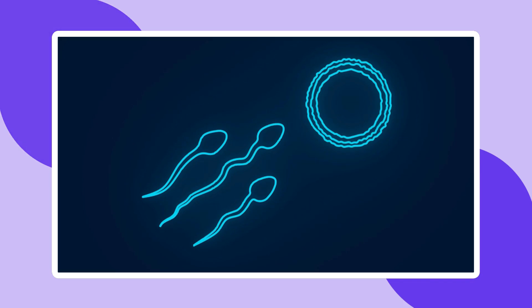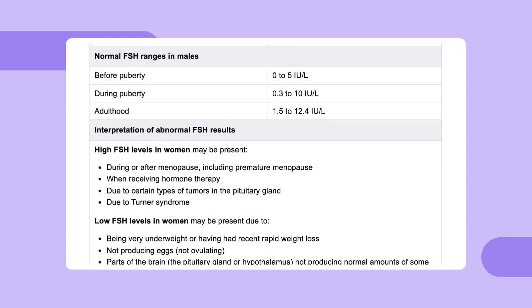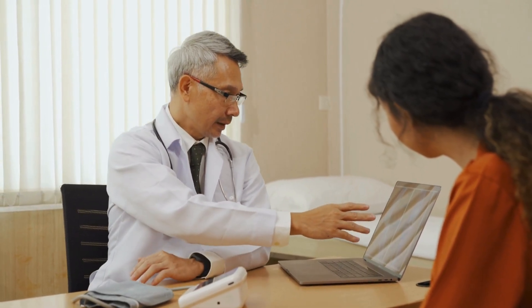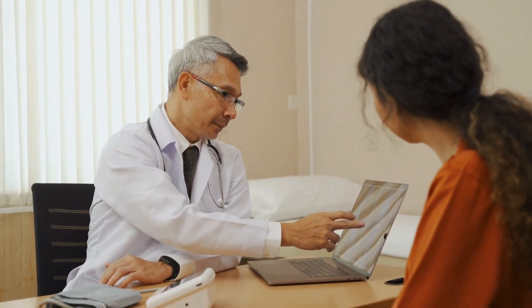The FSH levels chart lays out what's considered normal for FSH levels across different contexts. These ranges can vary a bit depending on the lab, and factors like weight and health conditions can also influence FSH levels.